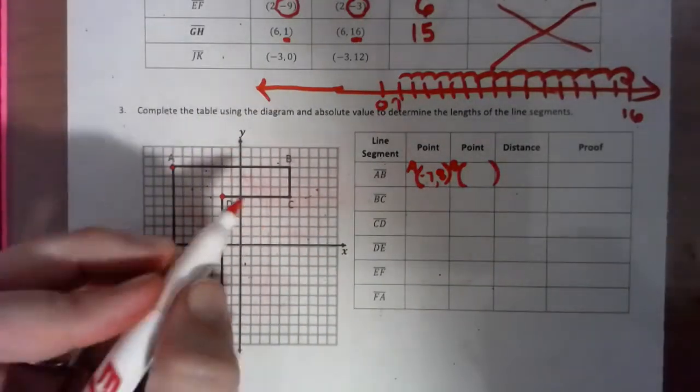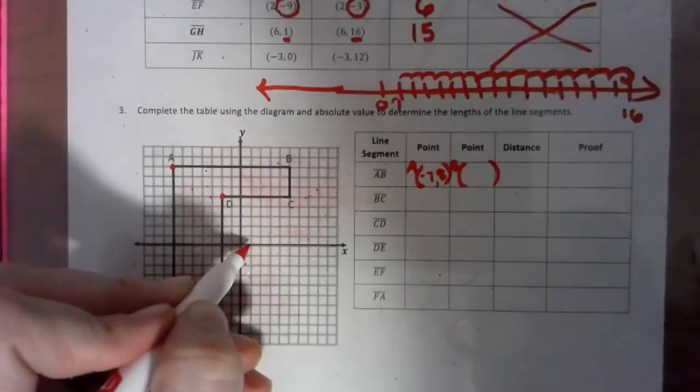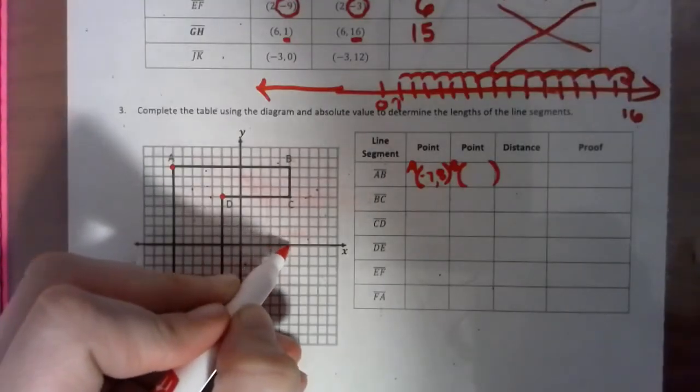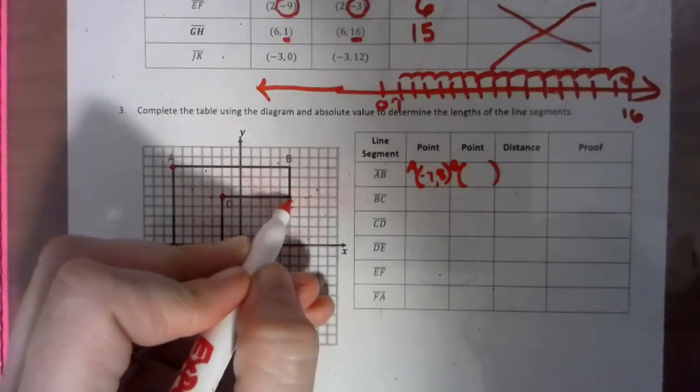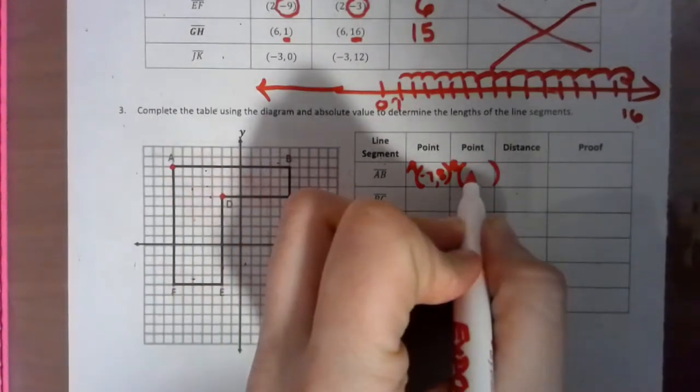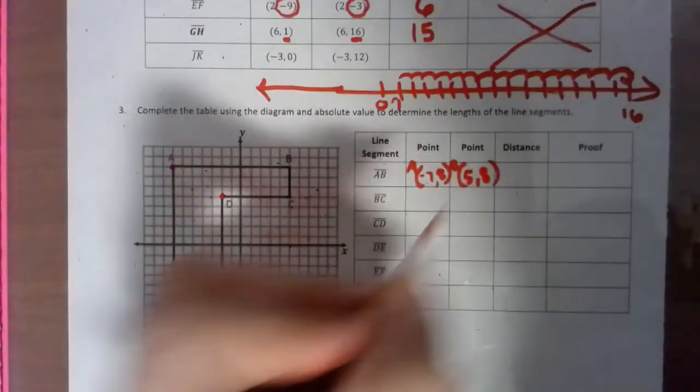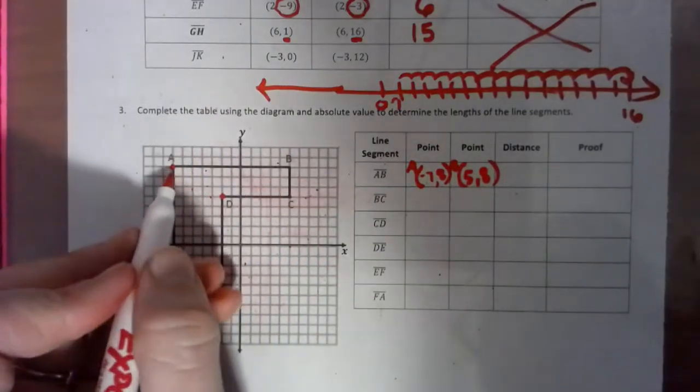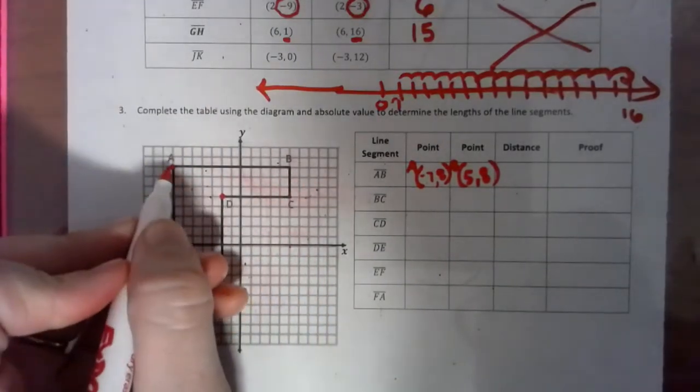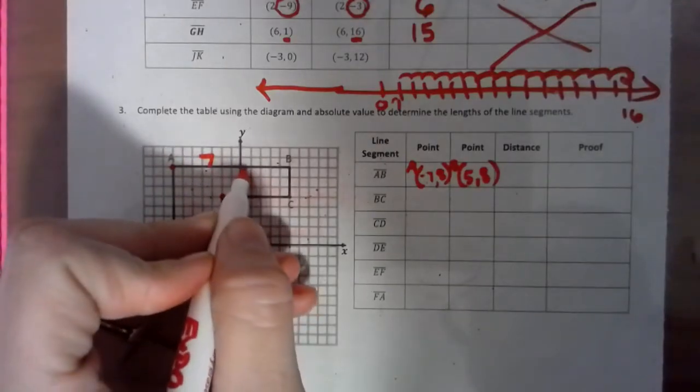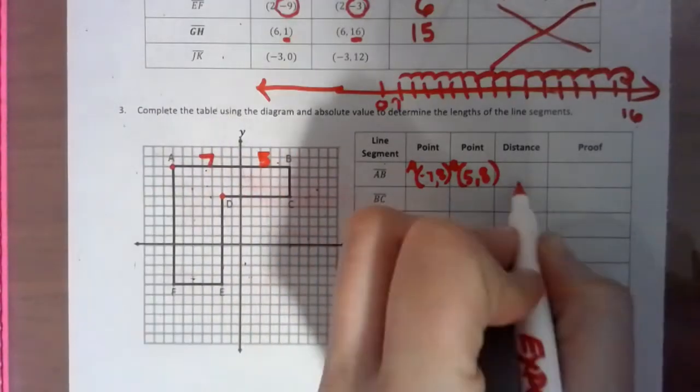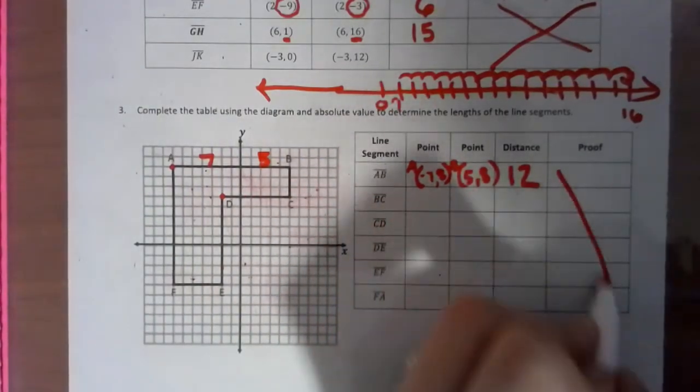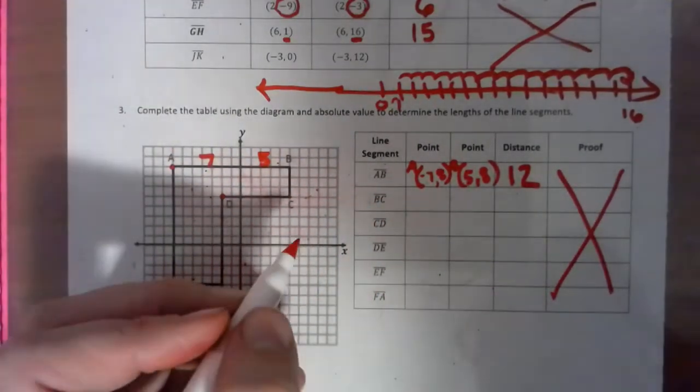And point B is over to the 1, 2, 3, 4, 5, and up 1, 2, 3, 4, 5, 6, 7, 8, so over to the 5 of 8. And as you can see, we just kind of have to count, but we know from A to here is 7 jumps, and from here to here is 5 jumps, so that is a total of 12 jumps. And like I said, we're not worrying about the proof category.